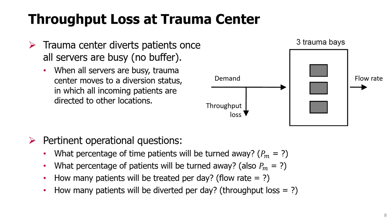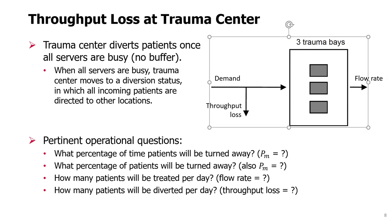Here is a process flow diagram showing what is happening. There are three servers. Demand arrives, and notice there is no buffer. We could put a diamond here to indicate: is the trauma center full? No — the patient goes in. Yes — the patient is diverted. From the perspective of this trauma center, the throughput is lost. So the flow rate will be only the demand that is served, not all the demand.